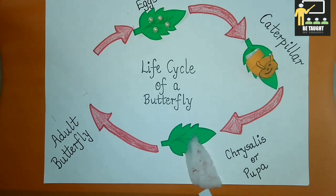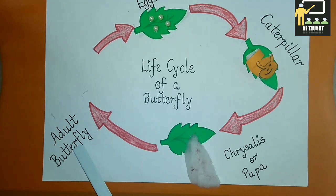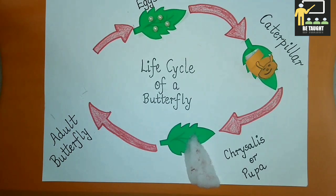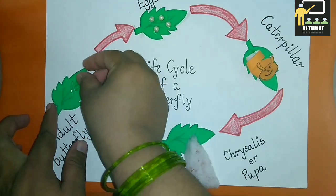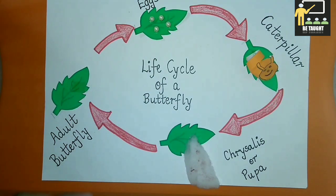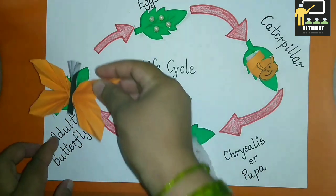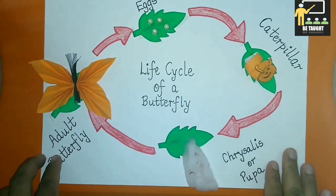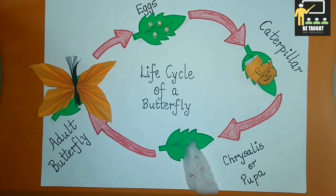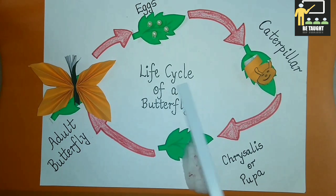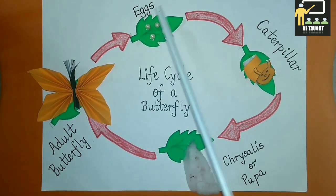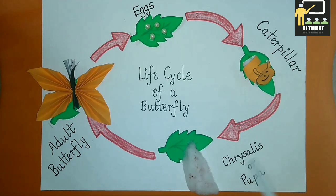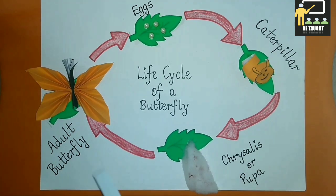The fourth and last stage is the adult butterfly. After about 10 to 12 days, a beautiful adult butterfly emerges out of the chrysalis. It now has four attractive wings and six long legs. This series of changes is the life cycle of a butterfly, called metamorphosis. All butterflies go through these stages of growth.